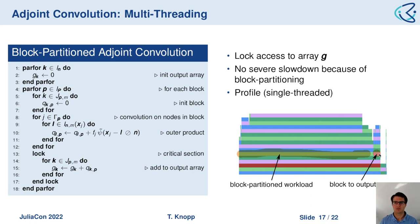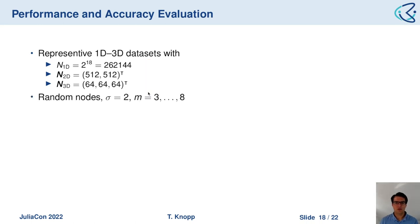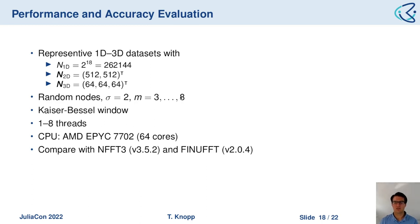We did performance and accuracy evaluations applying 1D to 3D transforms with random input nodes, using common accuracy settings, the Kaiser-Bessel window, one to eight threads on an AMD CPU with 64 cores. We compare NFFT.jl against NFFT3 and FiNUFFT using relative error as the accuracy measure. Benchmarks are done with BenchmarkTools.jl.